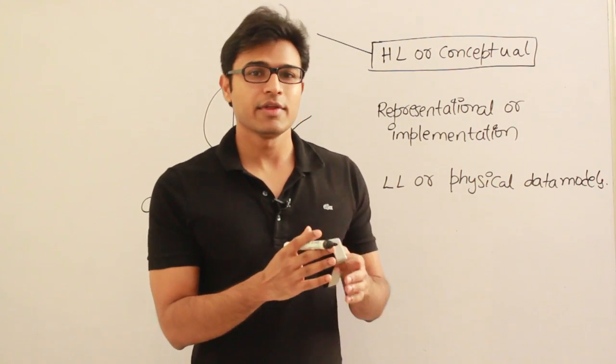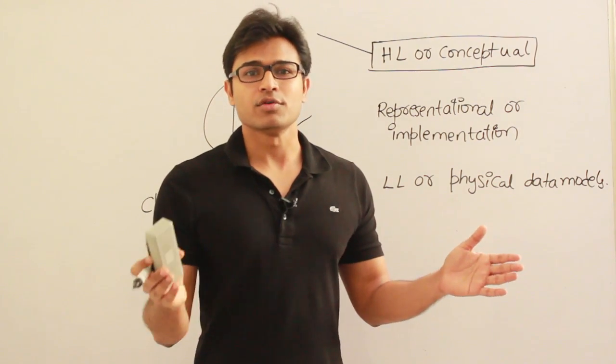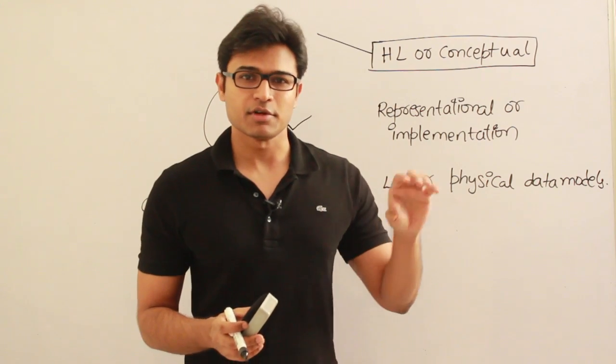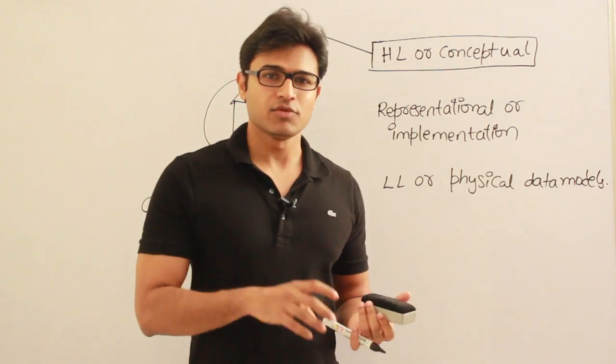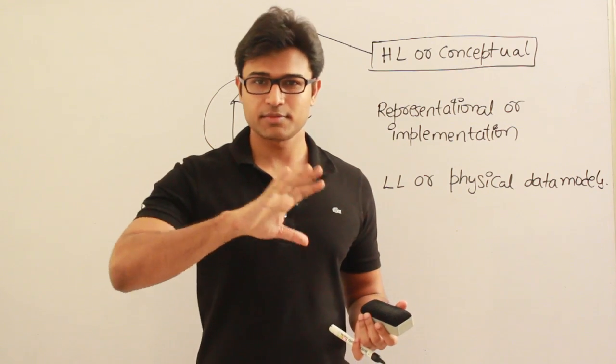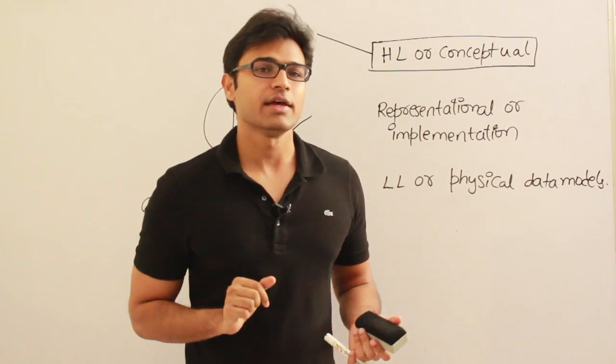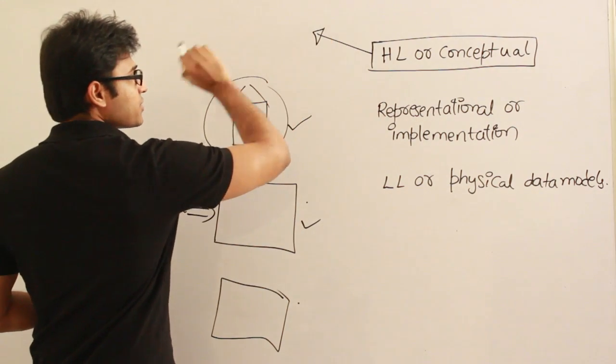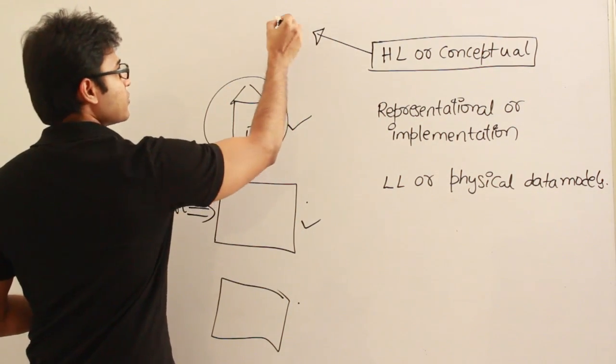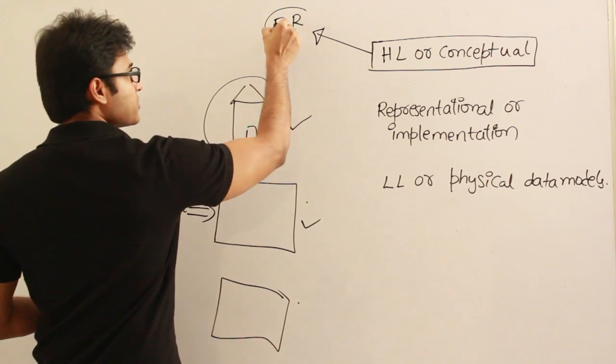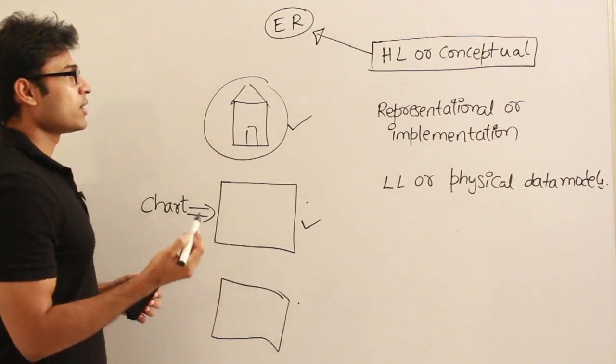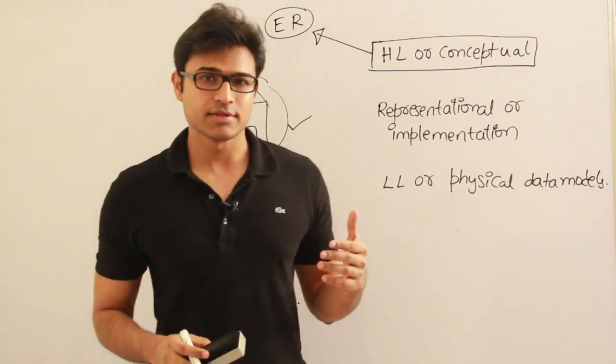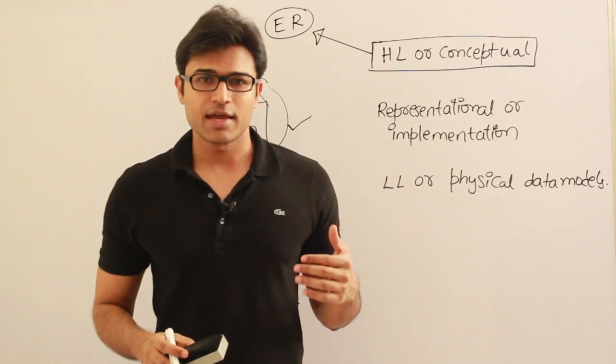And maybe there'll be relationships, like a student and course. A student attends the course. Attends is a relationship between student entity and course entity. Like that, if you draw the diagrams and if you try to explain it clearly, then that is called as conceptual view. And the conceptual view, the most popular conceptual modeling is ER modeling, Entity Relationship modeling. There are various modelings available, but then the most popular is entity relationship model. And we have that in syllabus. We are going to discuss about entity relationships.